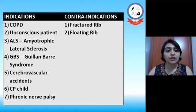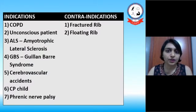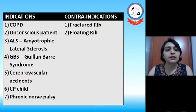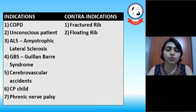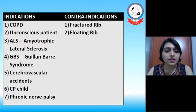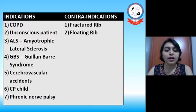Indications for PNF technique include COPD, unconscious patients, ALS (amyotrophic lateral sclerosis), GBS (Guillain-Barré syndrome), and such neuromuscular conditions are very well treated with PNF in respiration. Next are cerebrovascular accidents, in which a patient gets a stroke and can be treated with PNF techniques, cerebral palsy, and phrenic nerve palsy in which we may find paralysis of the diaphragm.